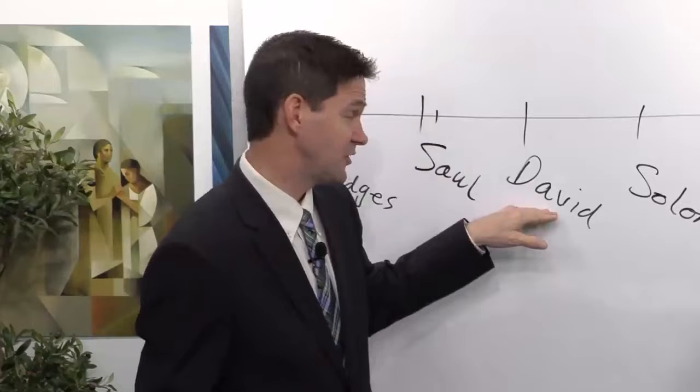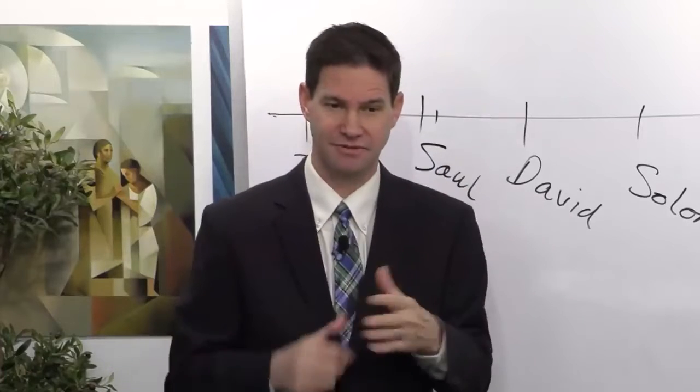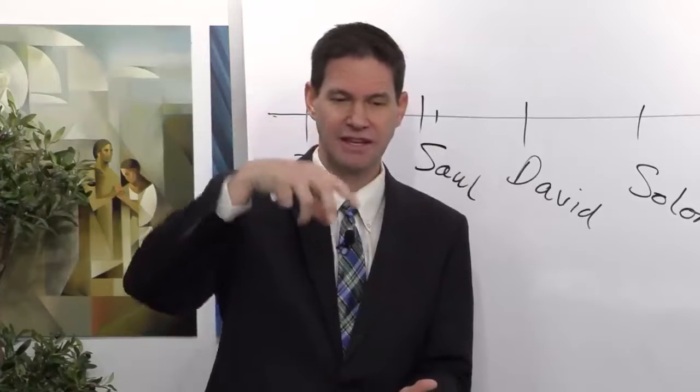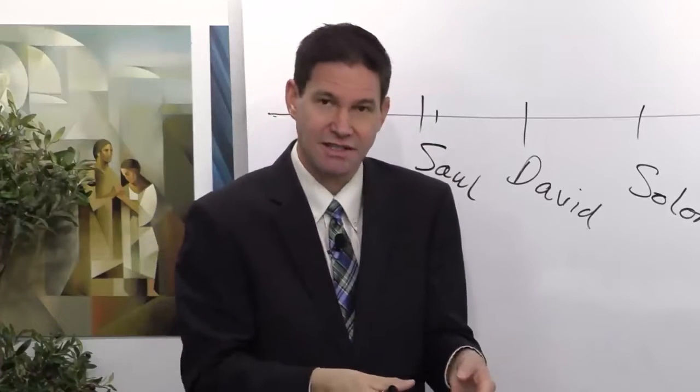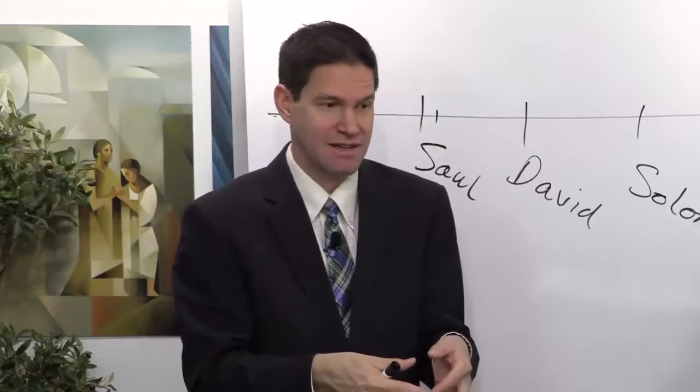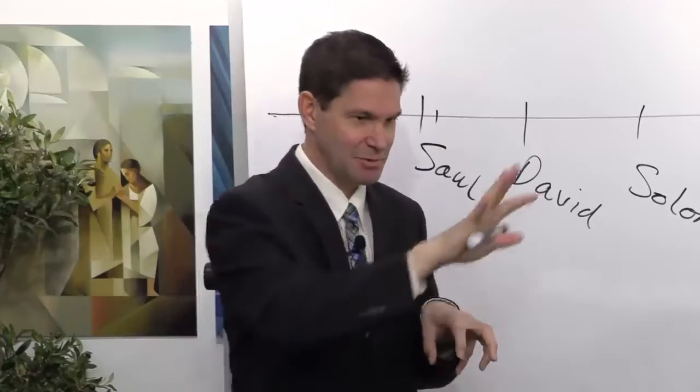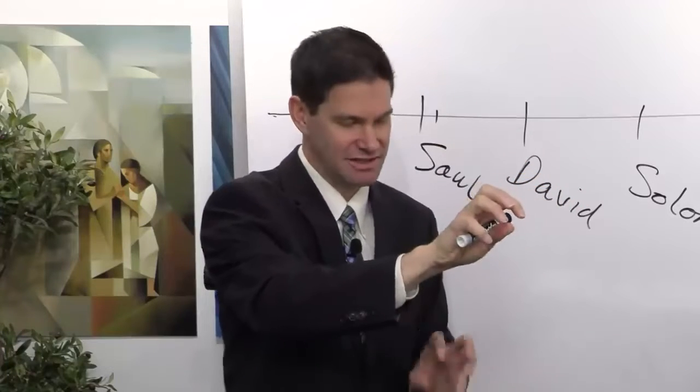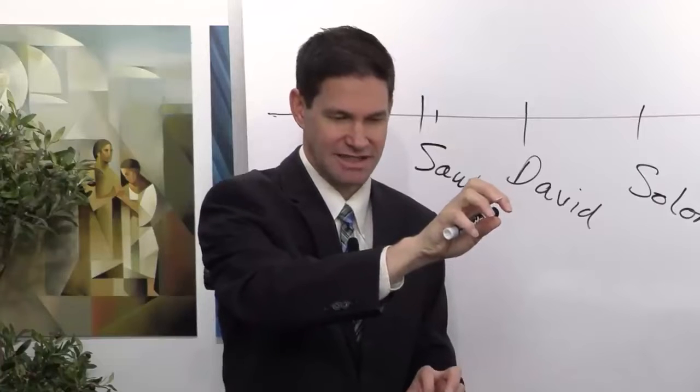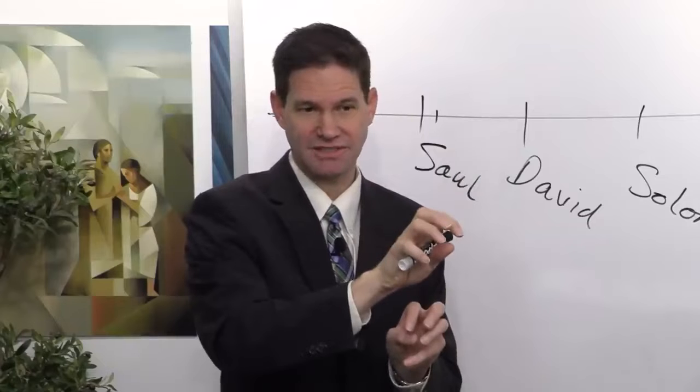Meanwhile, down south in the southern part of the United Kingdom of Israel, David has the tribe of Judah who is coming to him, and he's the anointed king. So, up north, you have people converging and gathering around Ish-bosheth and down south around King David, and for two years there's this conflict in the first part of 2 Samuel.